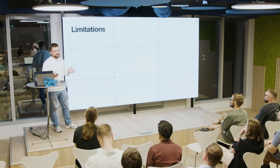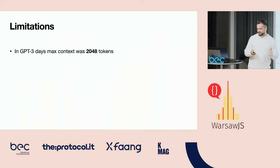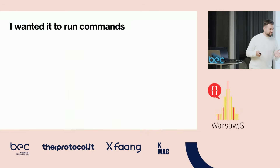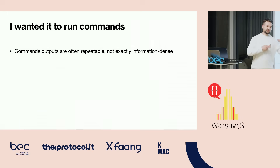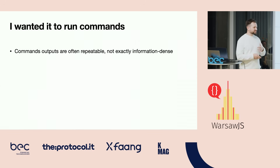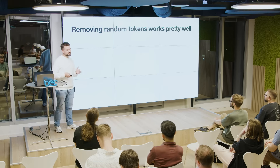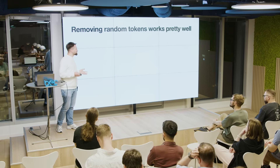But it was ChatGPT free, if you remember. Limitations were pretty harsh — it was like 2048 tokens, and it ain't much. I tried to work with that. I wanted to run commands, and often when you see outputs of certain commands, they're not really that dense in terms of information. Sometimes you can just remove entire parts of text and it still works, it still makes sense. So removing random tokens works pretty well.